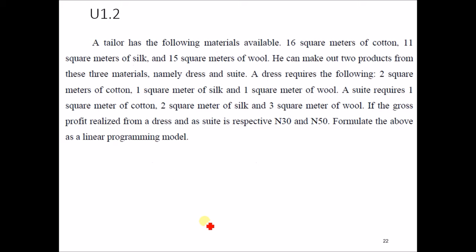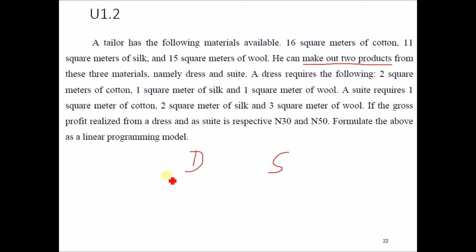The second problem: a tailor has 16 square meters of cotton, 11 square meters of silk, and 15 square meters of wool. The keyword is 'make' — he can make 2 products out of these 3 materials. The products are named dress and suit. A dress requires 2 square meters of cotton, 1 square meter of silk, and 1 square meter of wool. Resources are denoted C for cotton, S for silk, and W for wool. The profit values are 30 and 50.